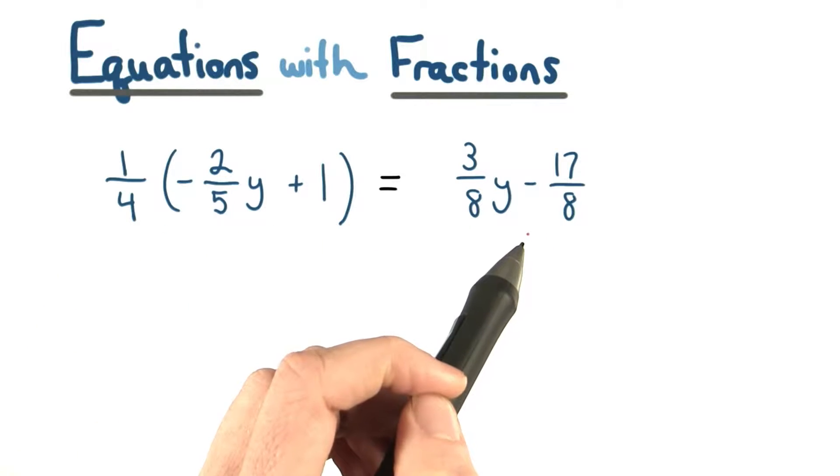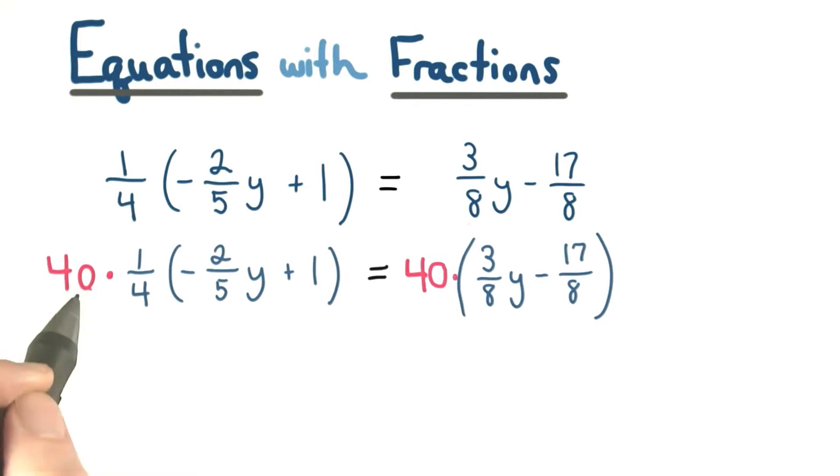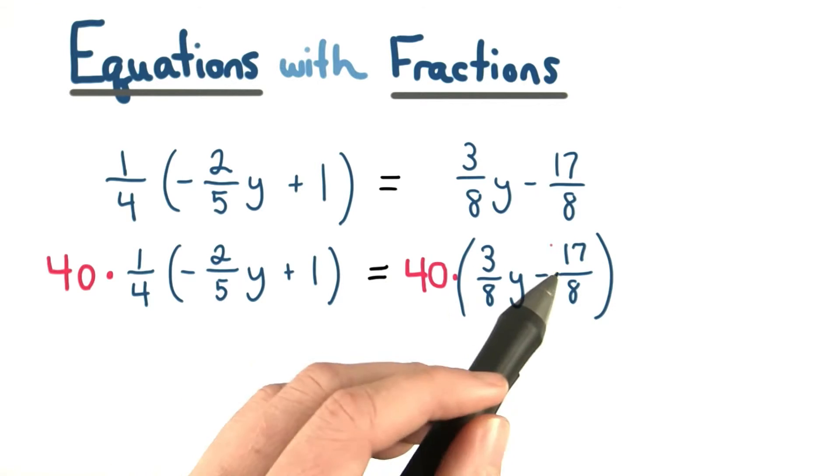Let's clear these fractions by multiplying through by 40. I'm going to multiply the left by 40 and the right by 40. I've multiplied this side by 40, and notice I didn't need to multiply these inside terms because eventually this will get distributed to each of them. I put parentheses around the right side because I need to distribute the 40 to both these terms.